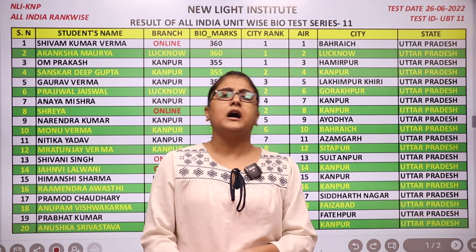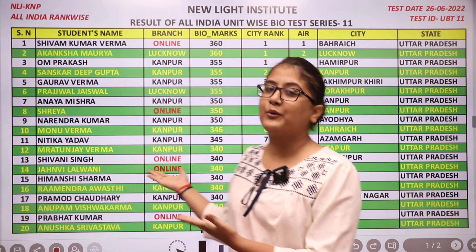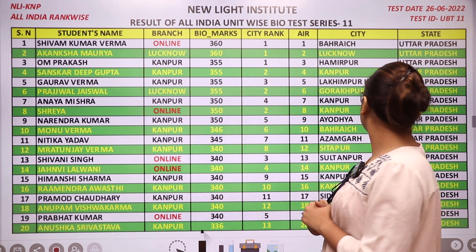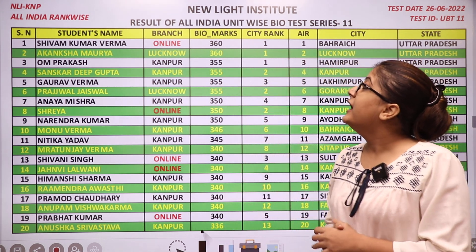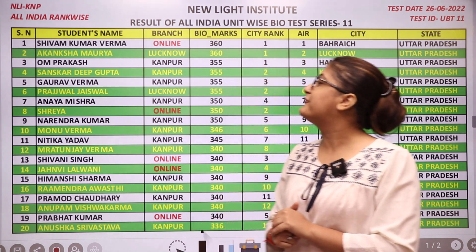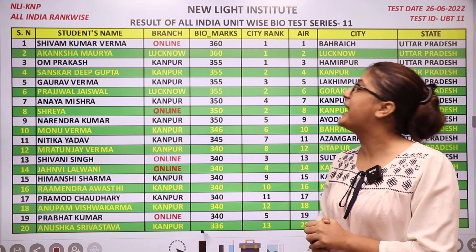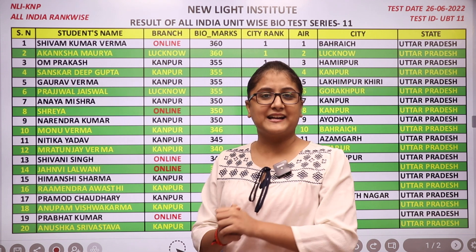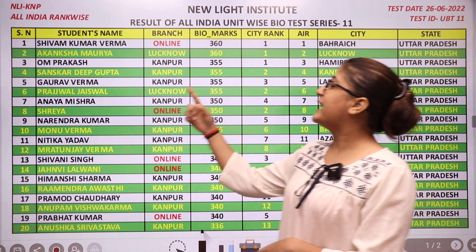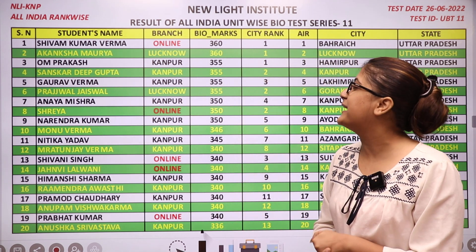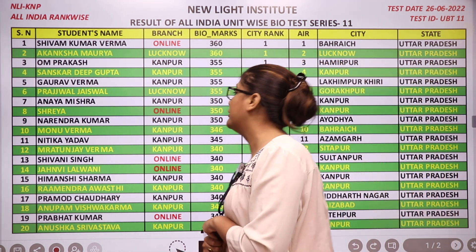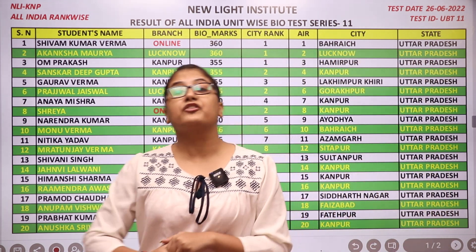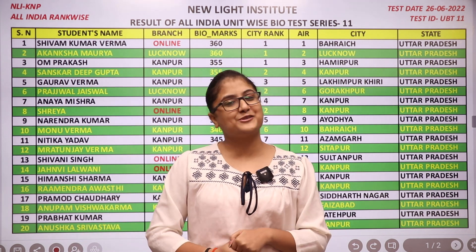Now talking about our top 20 performers of this test — AIR 1 goes to Shivam Kumar Verma, who is from Uttar Pradesh. AIR 2 goes to Akansha Maurya, AIR 3 goes to Om Prakash, AIR 4 is taken by Sanskar Deeb Gupta, AIR 5 by Gaurav Verma, AIR 6 by Prajwal Jaiswal, AIR 7 by Anay Mishra, AIR 8 goes to Shreya, AIR 9 by Narendra Kumar, and AIR 10 by Monu Verma. To your surprise, all these top 10 performers are from Uttar Pradesh itself. A big congratulations to all of you.